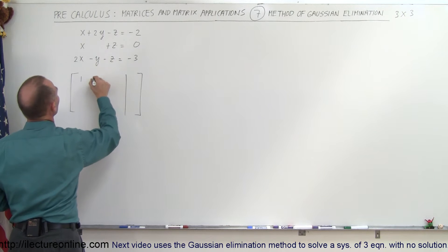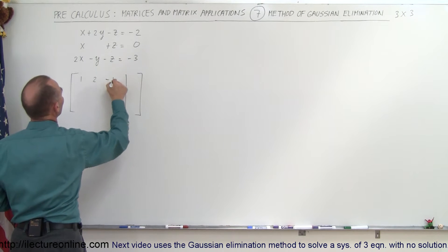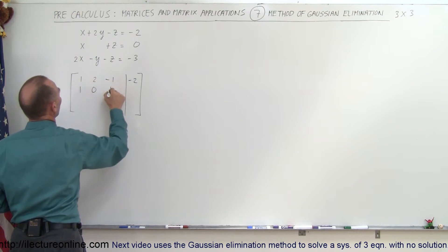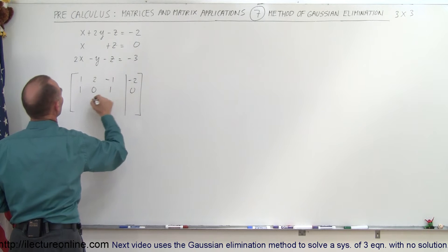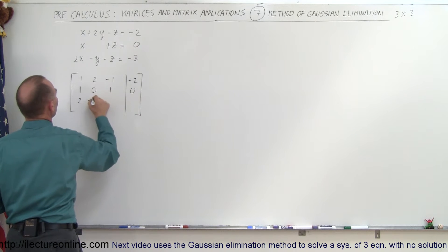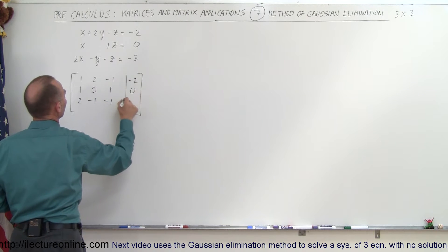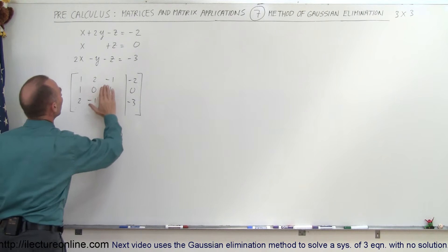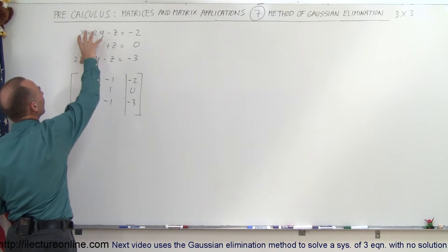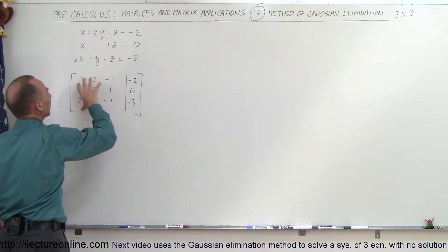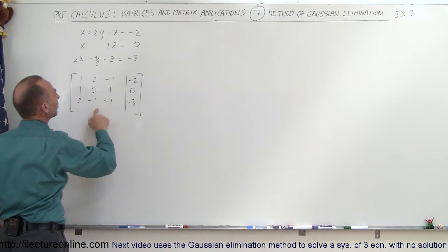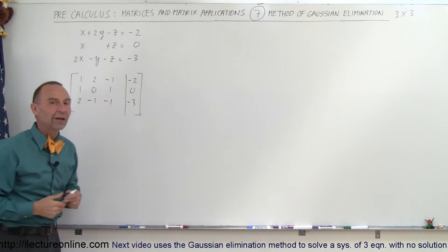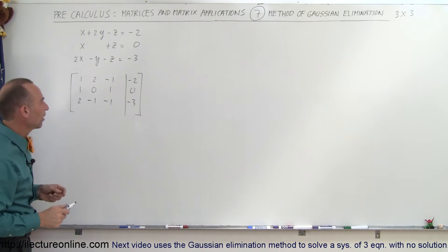The augmented matrix entries are: 1, 2, negative 1, negative 2; then 1, 0, 1, 0; then 2, negative 1, negative 1, and negative 3. In other words, to the left we put the coefficients of the x, y, and z variables, and to the right we plug in the constants on the right side of the equal sign.